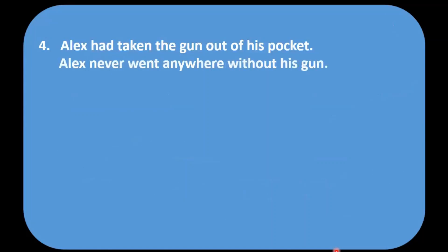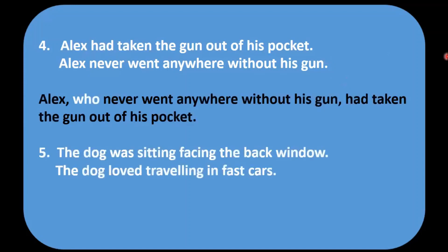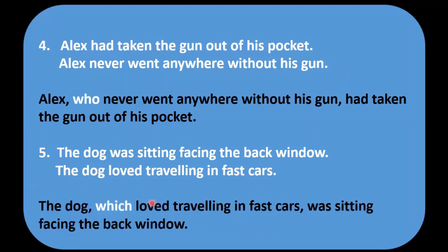Alex had taken the gun out of his pocket. Alex never went anywhere without his gun. Alex appears in the second sentence in the subject position, so simply use who. Answer: Alex, who never went anywhere without his gun, had taken the gun out of his pocket. Number five: The dog was sitting facing the back window. The dog loved travelling in fast cars — it is an animal, so use which. Answer: The dog, which loved travelling in fast cars, was sitting facing the back window.